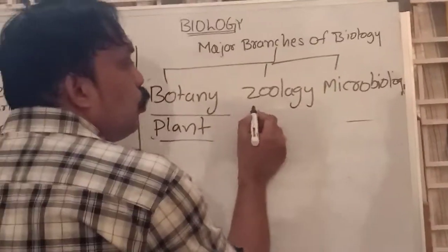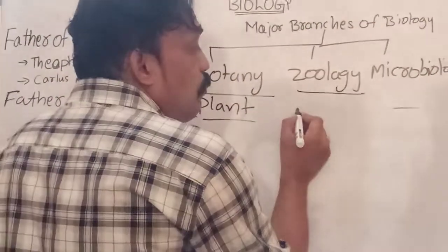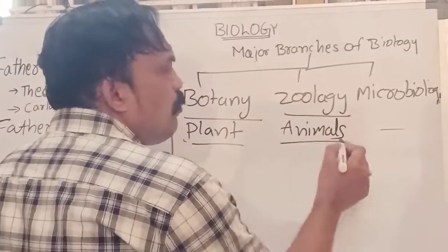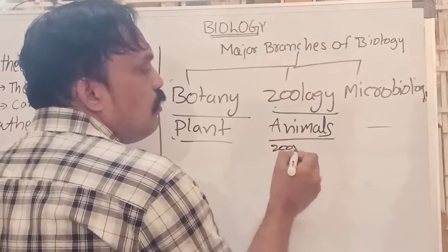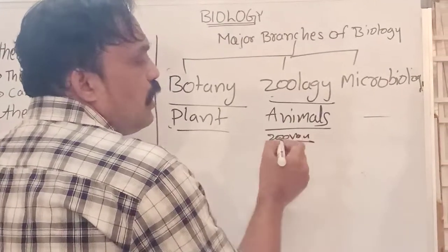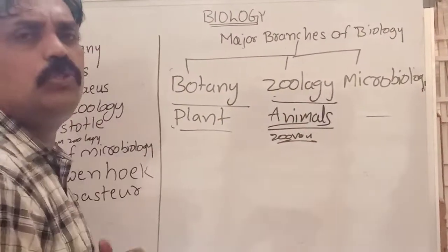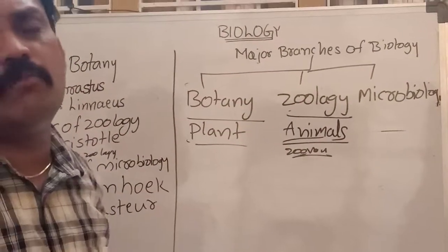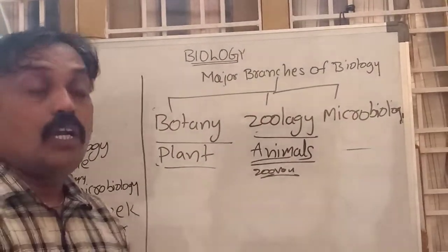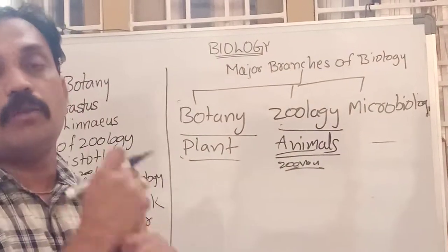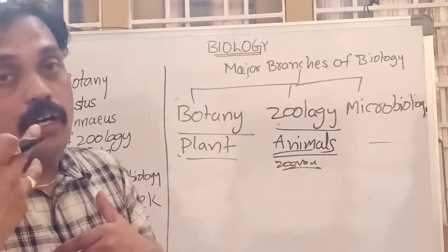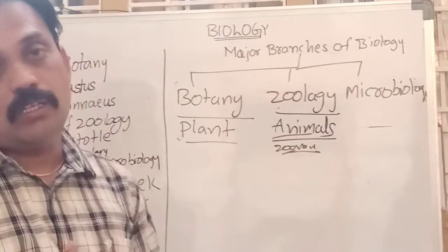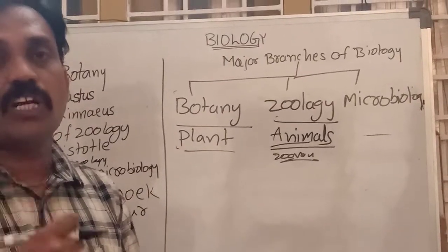And study about Zoology — the next one means what? Study about animals. The second major branch is study about animals, all types of animals. Especially invertebrates, and all types of microorganisms — even all types of animals we have to discuss about. Zoology means the study about animals.